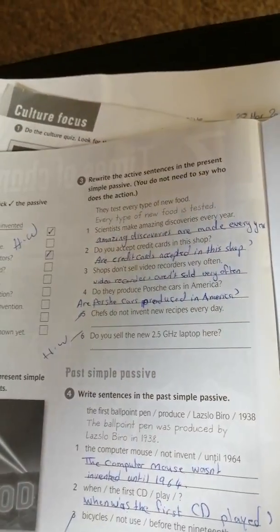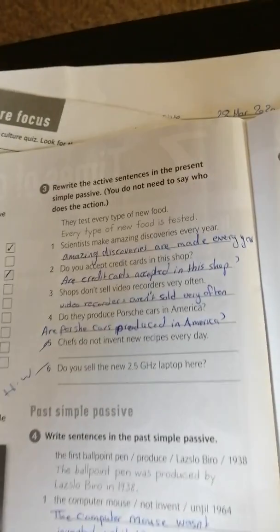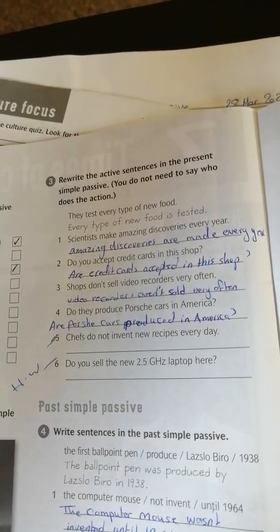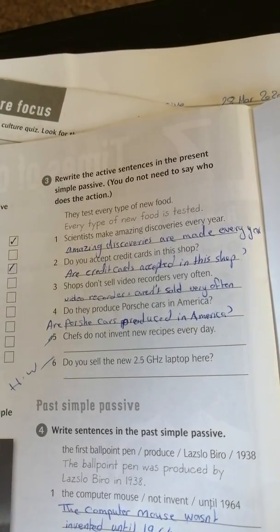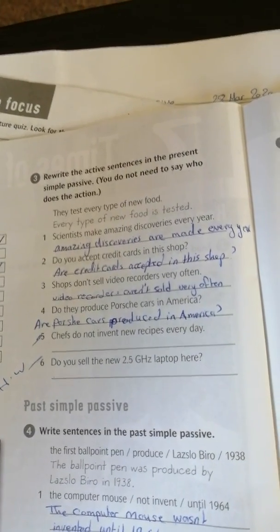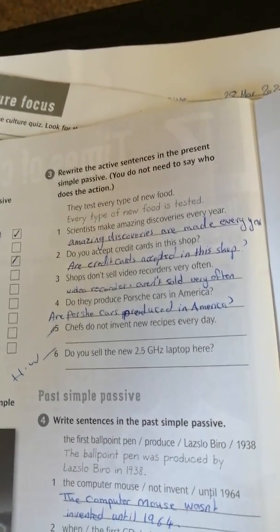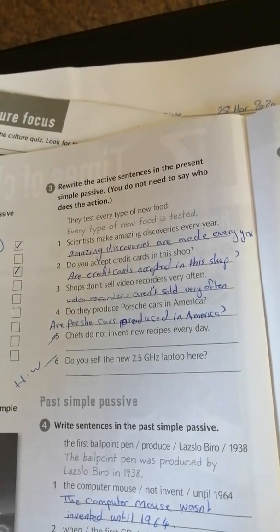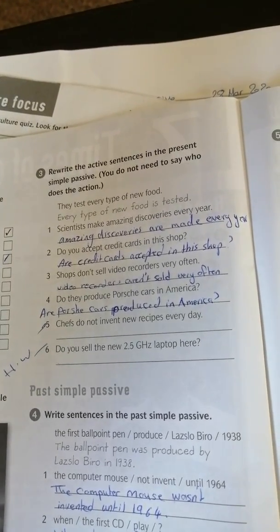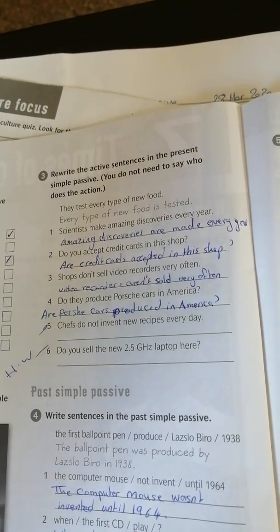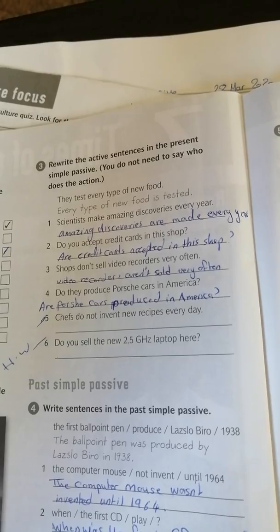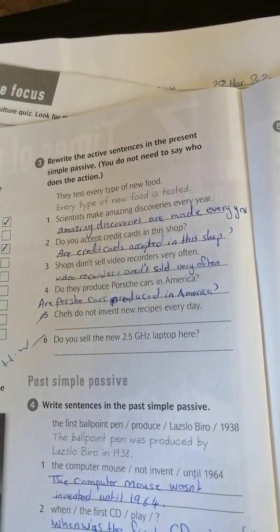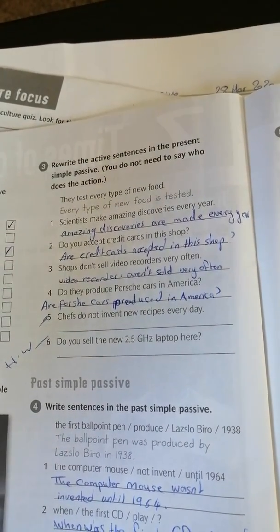This is exercise two. Now exercise three: rewrite the active sentences in the present simple passive. You do not need to say who does the action, so without by. Scientists make amazing discoveries every year. Amazing discoveries are made every year. Do you accept credit cards in the shop? Are credit cards accepted in the shop?